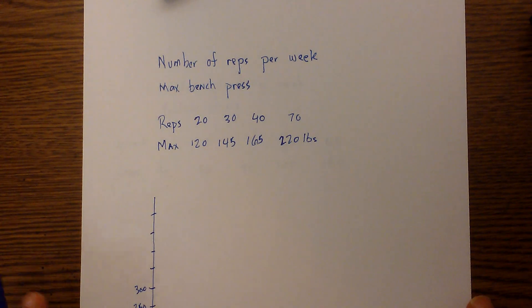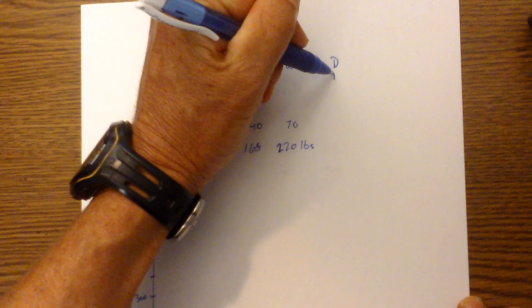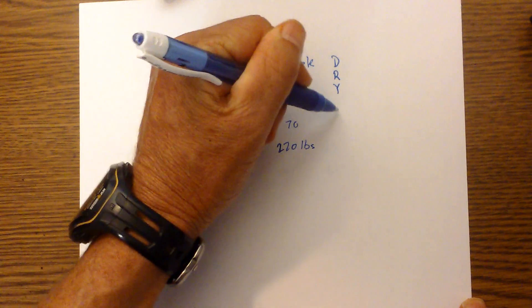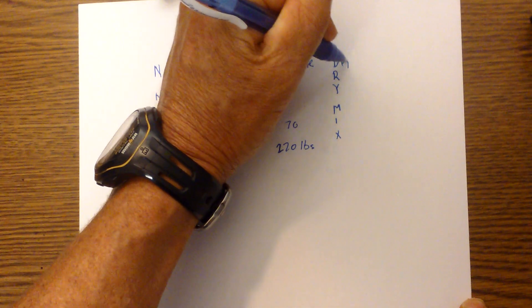What I can use is an expression called DRY MIX to help me remember how to set up the graph properly. The DRY stands for Dependent, Responding, and this goes on the Y-axis.